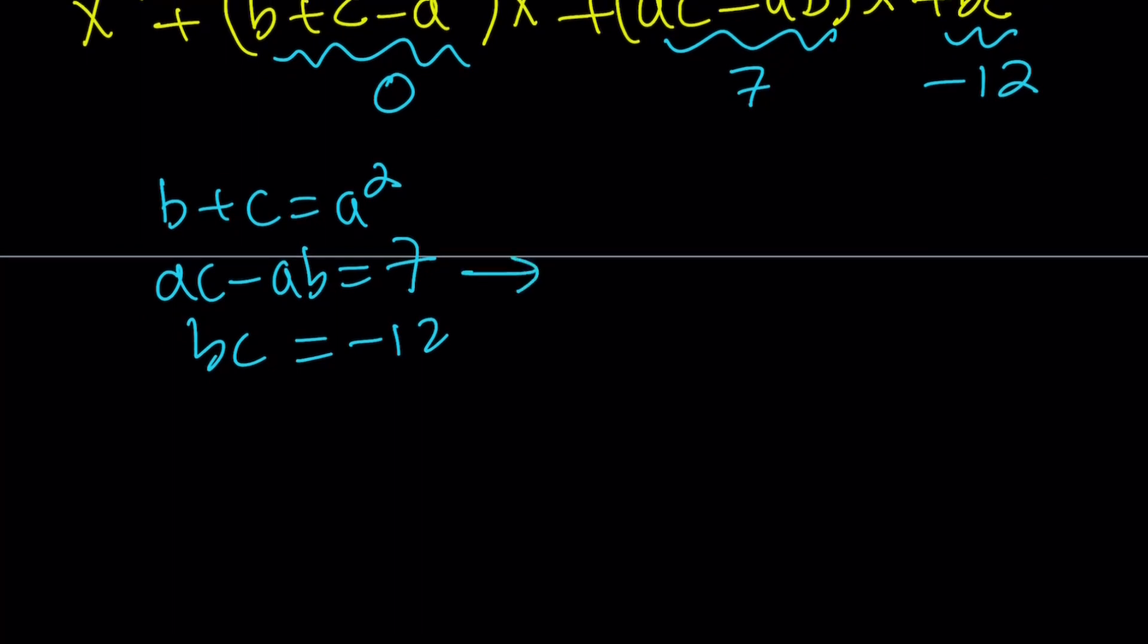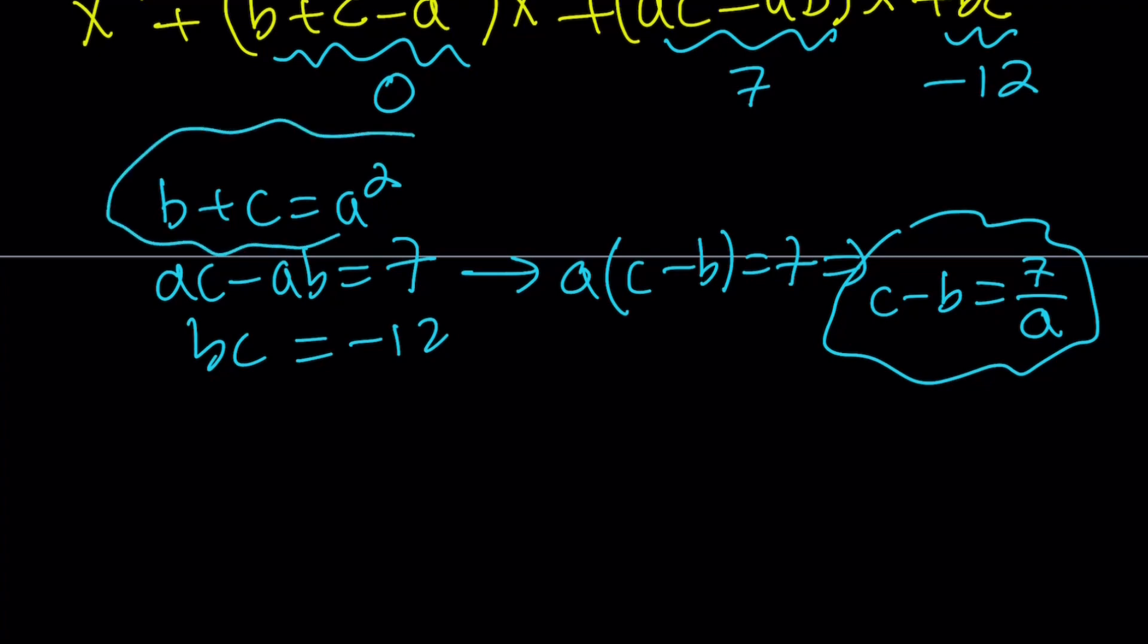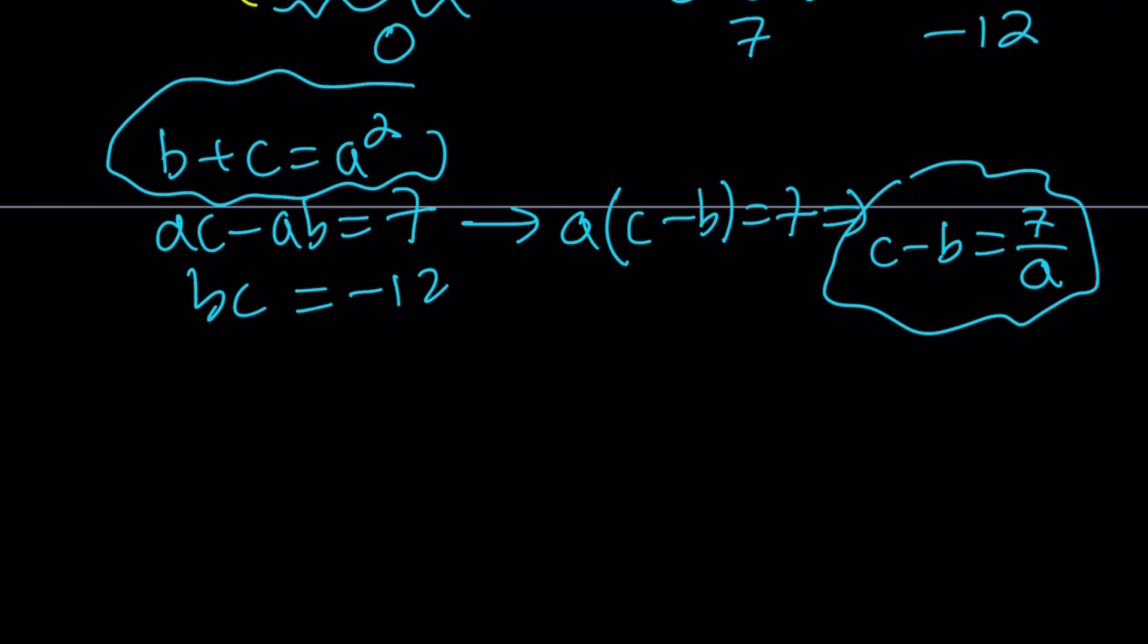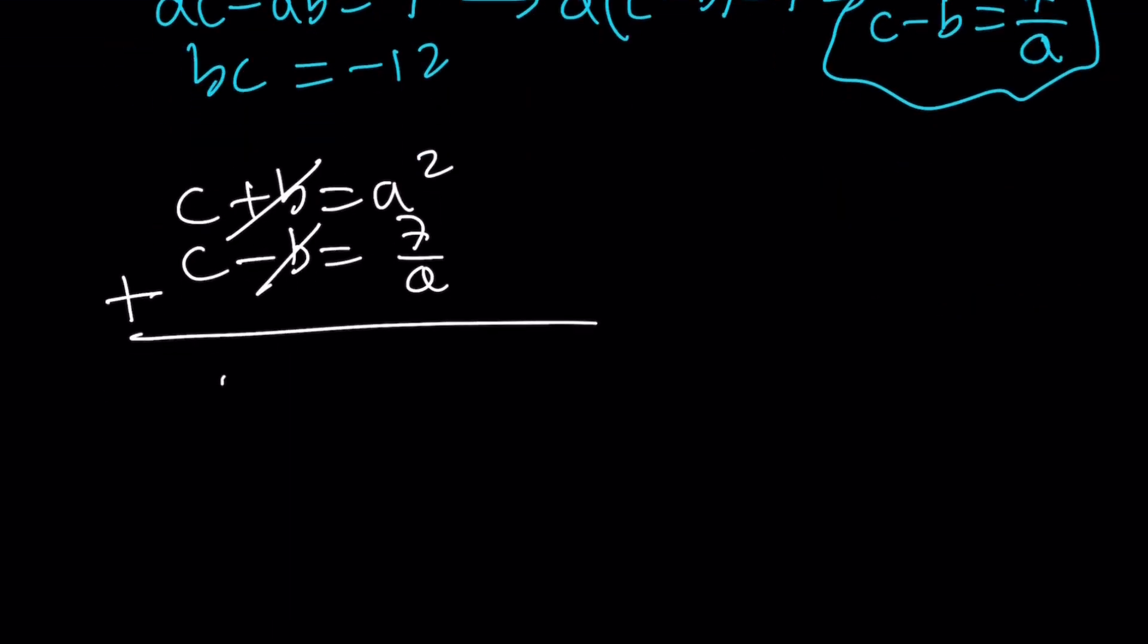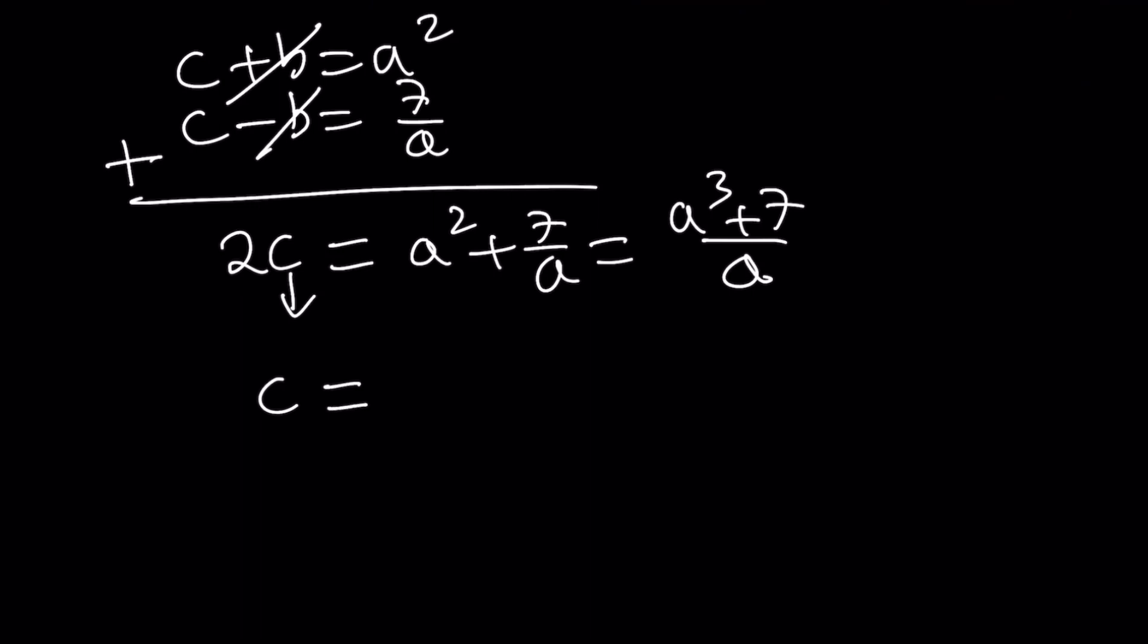I get the following: b plus c equals a squared, ac minus ab equals 7, and bc equals negative 12. We have three variables and three equations. Let's manipulate the second one. Take out a and divide by a, so we can get c minus b in terms of a. Notice that I have b plus c and I have c minus b. We can put those together and eliminate. Write the first one as c plus b equals a squared, and the second one as c minus b equals 7 over a. Then add these equations up. b cancels out and we get 2c. I'm going to make a common denominator, and from here I'll be solving for c. If you divide both sides by 2, c becomes a cubed plus 7 over 2a.